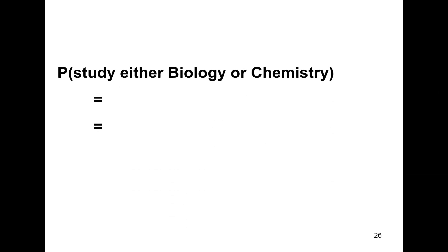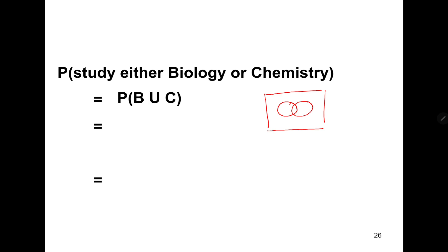The probability of studying either biology or chemistry is represented as P(B union C). Looking at the Venn diagram, B union C covers students in B or C. We have 12 people plus 8 people plus 7 people who study chemistry only, over 100 overall students. Therefore, the probability of a student studying either biology or chemistry is equal to 0.27.